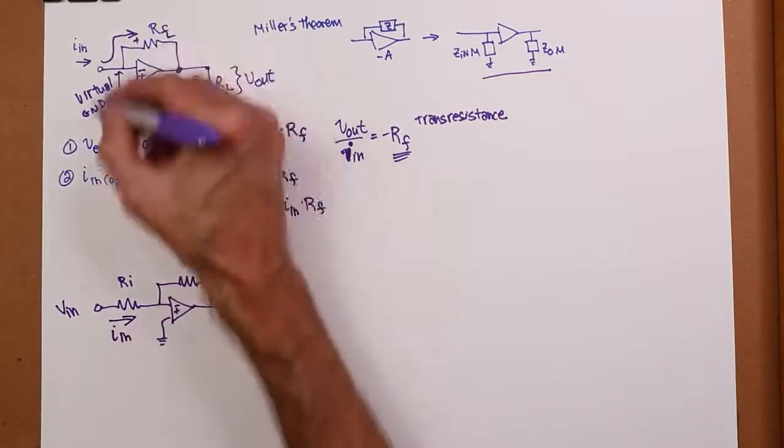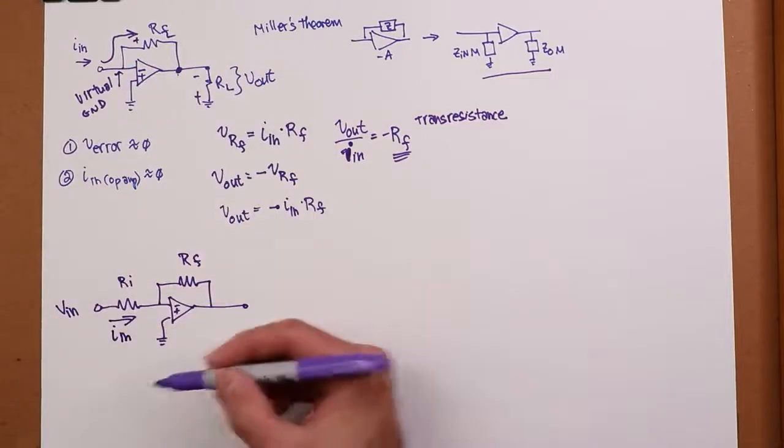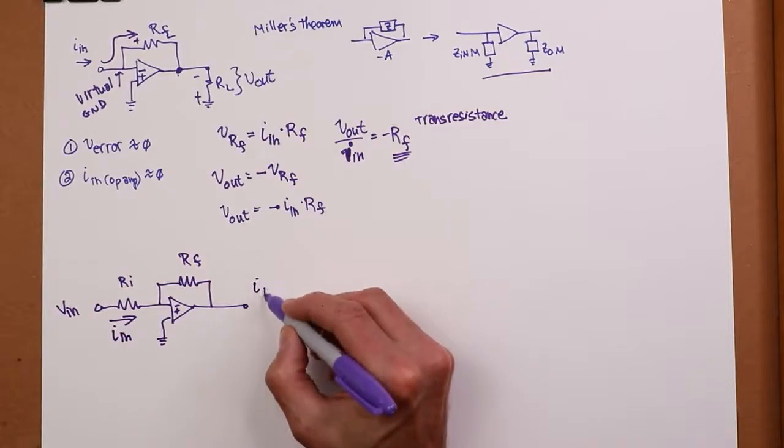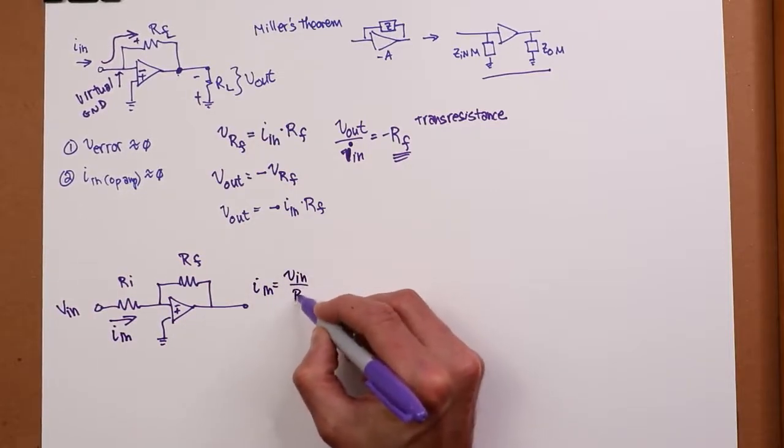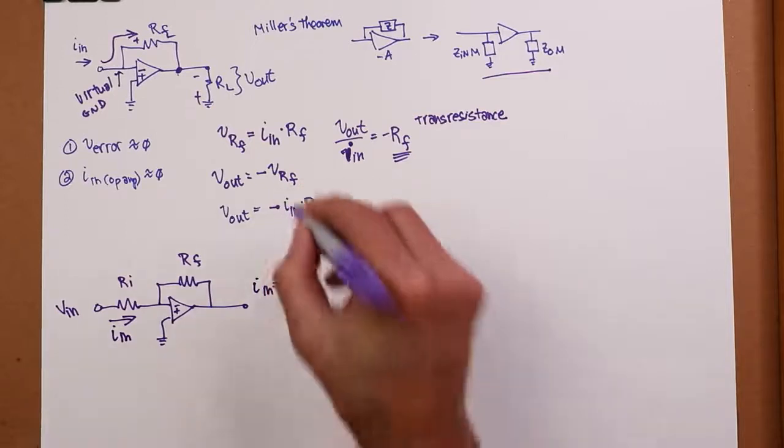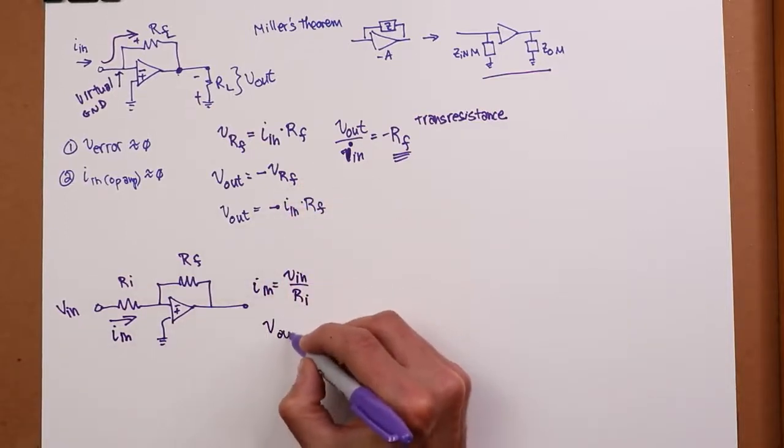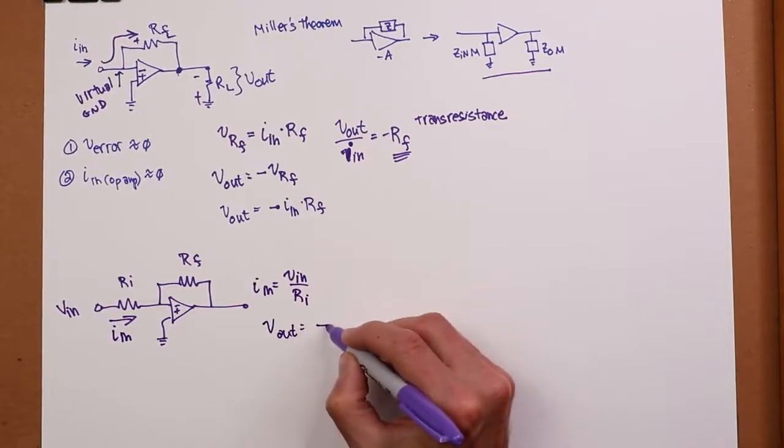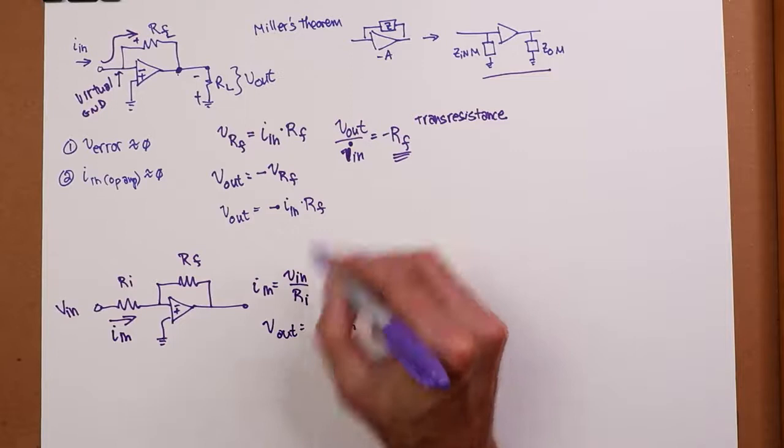And then we're back to this circuit. So basically, this resistor just takes the input voltage and turns it into a current. In other words, IN in this circuit has to equal, through Ohm's law, VIN divided by RI.